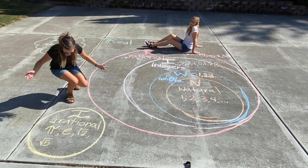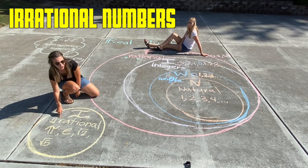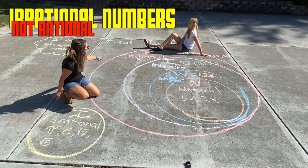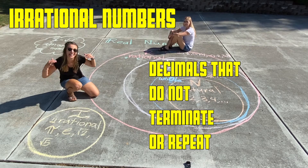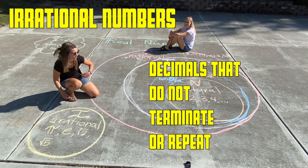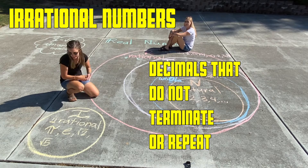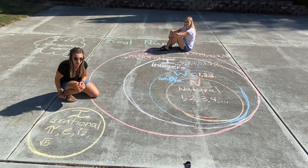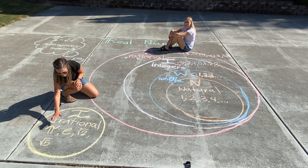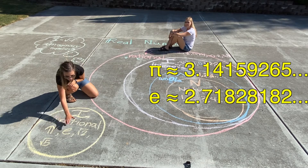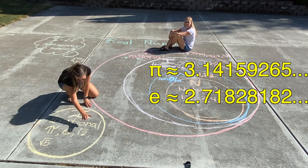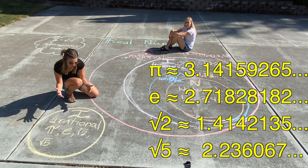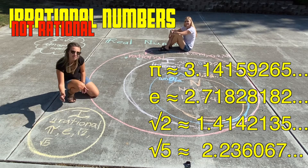Irrational numbers. 'Ir' means 'not,' so not rational, not fractional. These are numbers that cannot be written as fractions — they're decimals that don't terminate and don't repeat. A really good example is pi — that's kind of why we wrote it with a little squiggle, to remember irrational pi. Another number is e, which we'll learn about a bit later. And any square roots that aren't perfect squares — like square root of two, square root of five, and so on — those are irrational, not fractional.